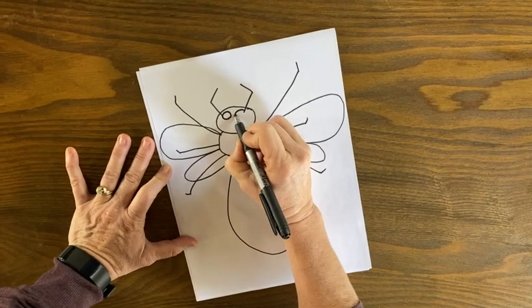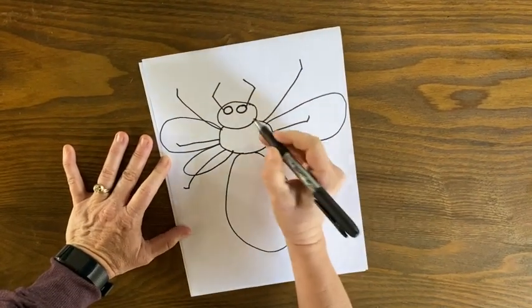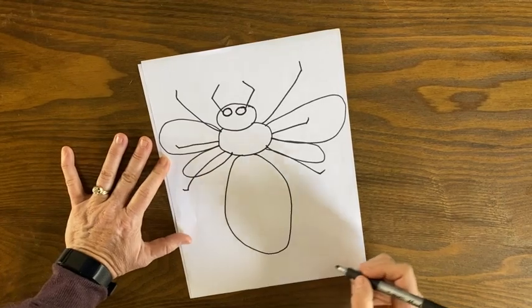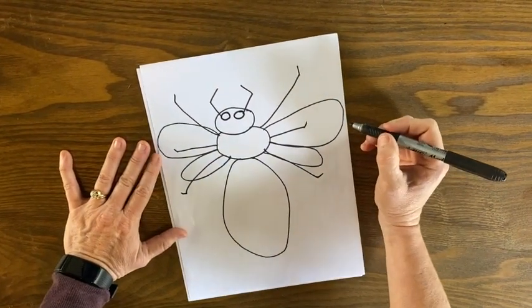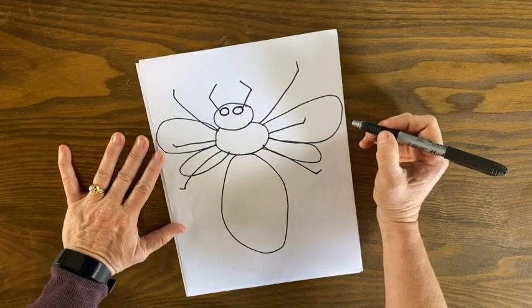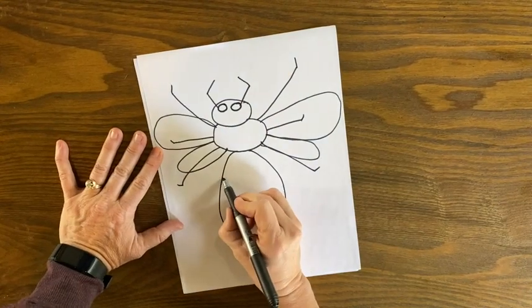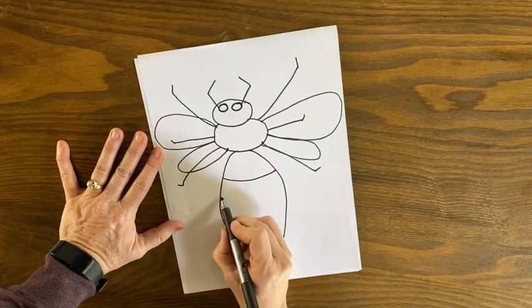And finally, maybe just some of the segments or lines that we often see on an insect. You can draw them however you like.